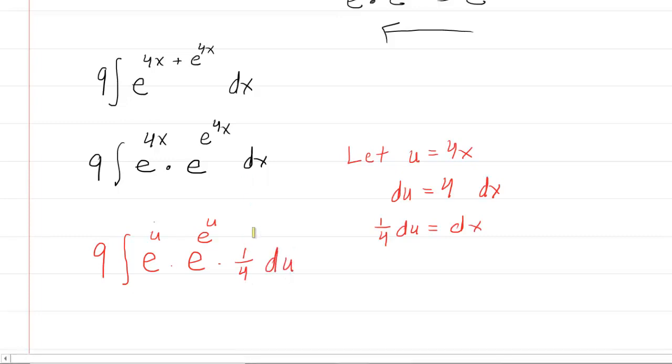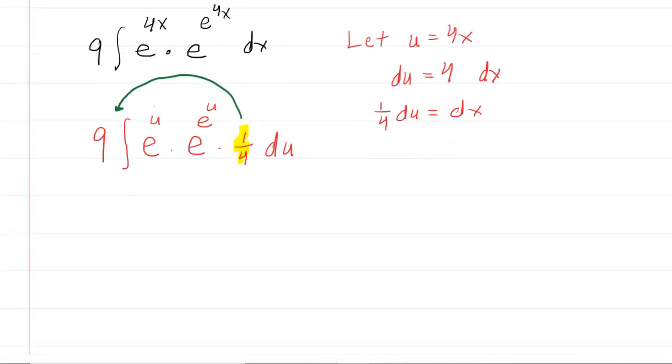Now we can take the 1 fourth because it's a constant and we can factor it to the outside. Be careful. There's already a 9 there. So you're going to multiply the 9 and the 1 fourth to get 9 fourths times the integral e to the u times e raised to the e to the u du.